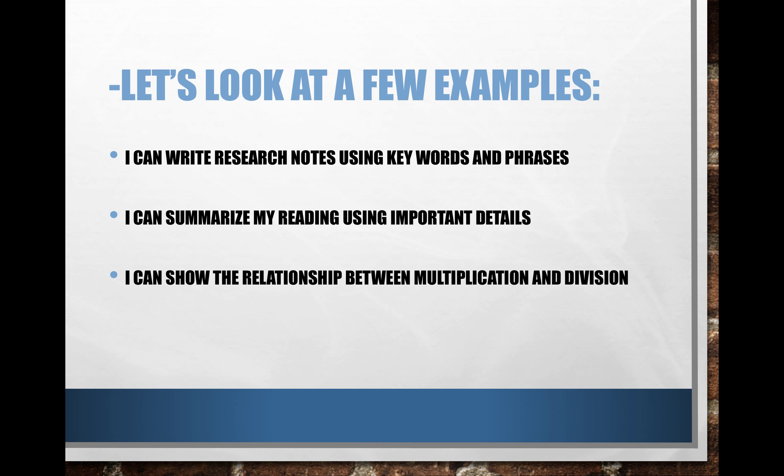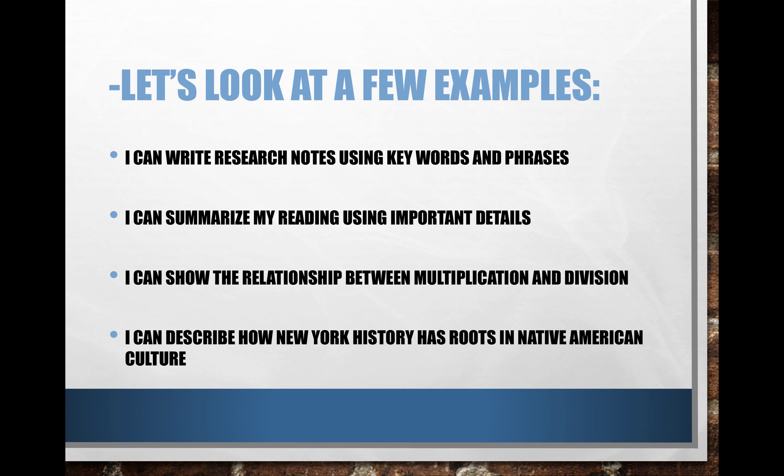'I can show the relationship between multiplication and division.' Again, we're using a verb — 'show' — and then a more specific condition, which is 'the relationship,' but we're not being super specific in terms of how they'll go about doing this. Lastly: 'I can describe how New York history has roots in Native American culture.' It's fairly general — we have a verb and a topic, but nothing specific about how we'll go about it or how we'll evaluate whether the student has achieved the goal.